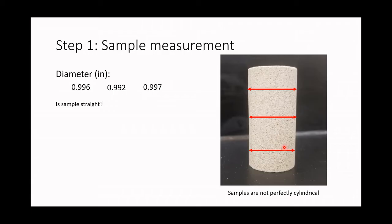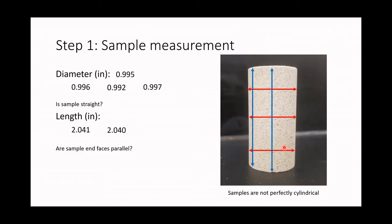The diameter of the sample is going to be the average of those measurements. Then we are going to measure the length. With the length, we are going to control whether the end faces are parallel, to be sure that the force we are applying is parallel to the axis of the plug. We measure at different angles and average the measurements to obtain an average length. Finally, we are going to measure the weight of the sample.